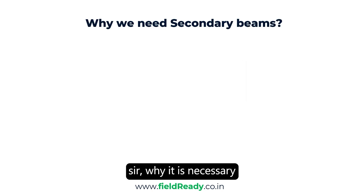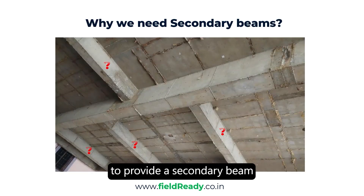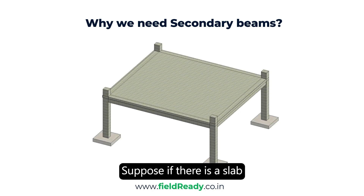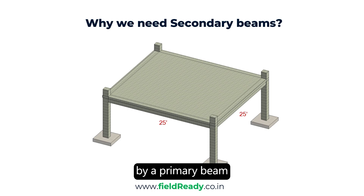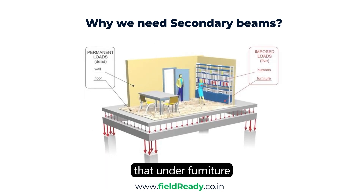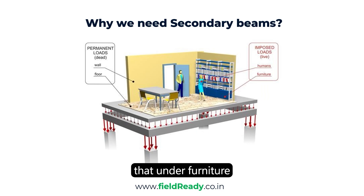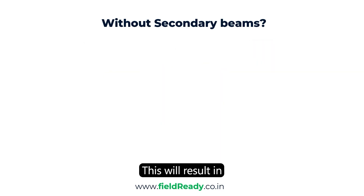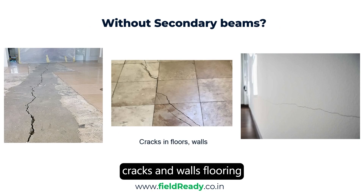You might be thinking: why is it necessary to provide a secondary beam when we already have the primary beam in the plan? Let's understand it with an example. Suppose there is a slab having a span of 25 feet by 25 feet, and it is supported by primary beams from all sides. Then there is a huge possibility that under furniture or partition wall load, over time this slab will bend, resulting in cracks in walls and floorings due to excessive bending.